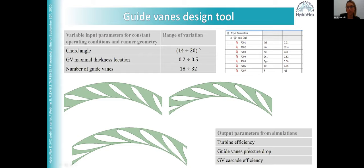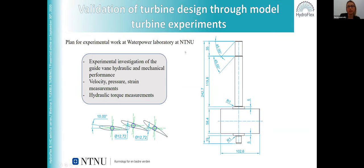The optimization is the next step; these are only the optimization criteria. When an optimal design of the guide vane has been chosen, it should be validated experimentally. By doing measurements in the water power laboratory in Trondheim — measuring velocity, pressure drop of the guide vanes — we would like to calculate turbine efficiency and measure the hydraulic torque on the guide vane. This will be needed to validate the numerical model and confirm that we have achieved the optimal guide vane geometry.